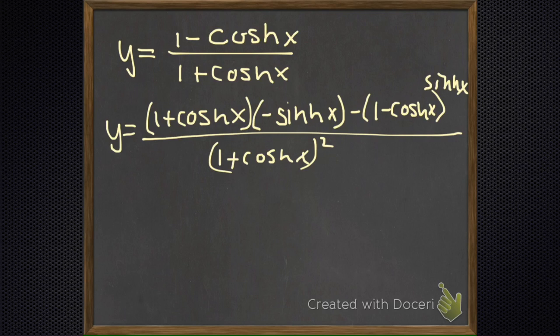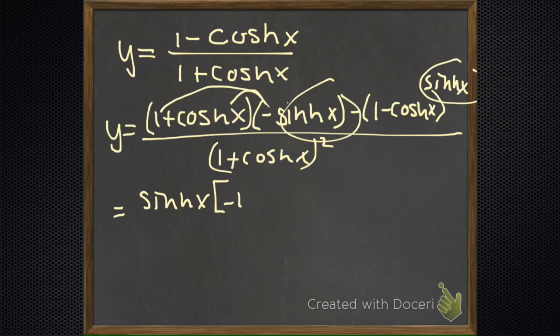All right, I guess we could do some nice factoring now. I have the hyperbolic sine in both of those places, so let me pull that out. And then leftover on the inside I'm gonna have minus one because this goes here and there, minus the hyperbolic cosine of x.